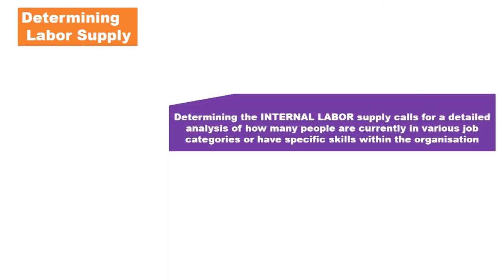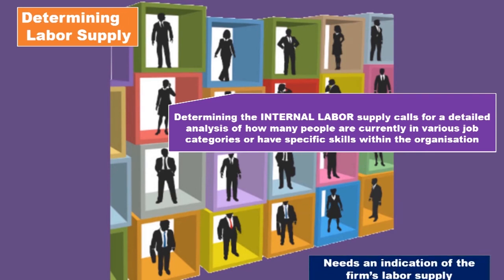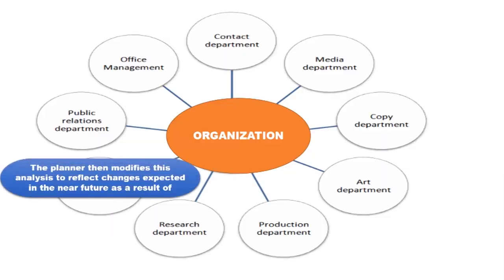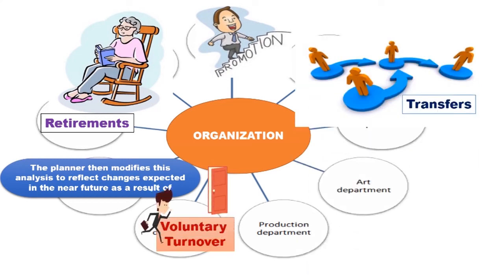The next forecasting step is determining the labour supply. Once a company has forecasted the demand for labour, it needs an indication of the firm's labour supply. Determining the internal labour supply calls for a detailed analysis of how many people are currently in the various job categories or have specific skills within the organisation. The planner then modifies this analysis to reflect changes expected in the near future as a result of retirements, promotions, transfers, voluntary turnover, and terminations.